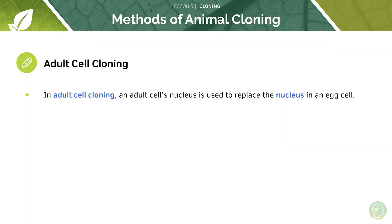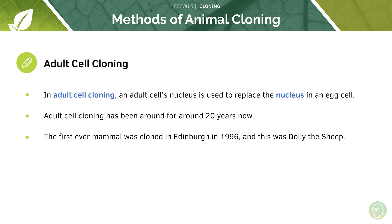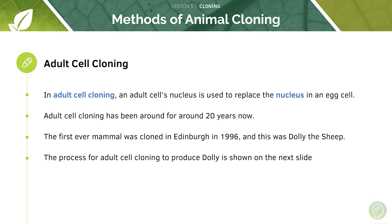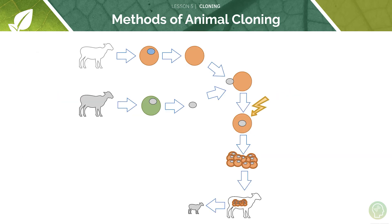Now let's move on to adult cell cloning. In adult cell cloning, an adult cell's nucleus is used to replace the nucleus in an egg cell. Adult cell cloning has been around for around 20 years. The first ever mammal was cloned in Edinburgh in 1996 — I'm sure you've all heard Dolly the sheep mentioned. The process for adult cell cloning to produce Dolly is shown on the next slide.